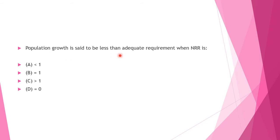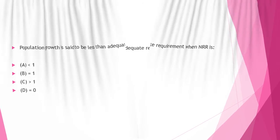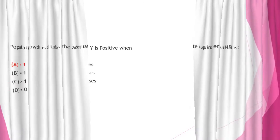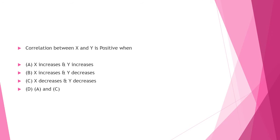Next question: Population growth is said to be less than the adequate requirement when NRR — where NRR is Net Reproductive Rate — Option A: less than one, Option B: equal to one, Option C: greater than one, Option D: equal to zero. Answer to this question is Option C: greater than one.